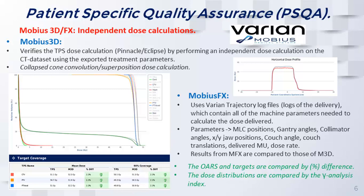We also looked at using Mobius 3D and Mobius FX, which are essentially Varian products that each work differently. Mobius 3D is essentially a secondary dose calculation — it sends over the treatment parameters from the treatment planning software along with the CT image and performs a secondary dose calculation in that framework.